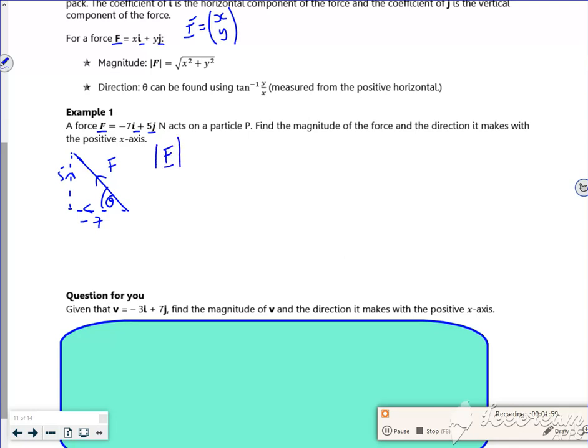So the magnitude of the force, using the modulus symbol, is going to be five squared plus seven squared, which gives me, stick it in your calculator, you get roughly 8.6 Newtons.